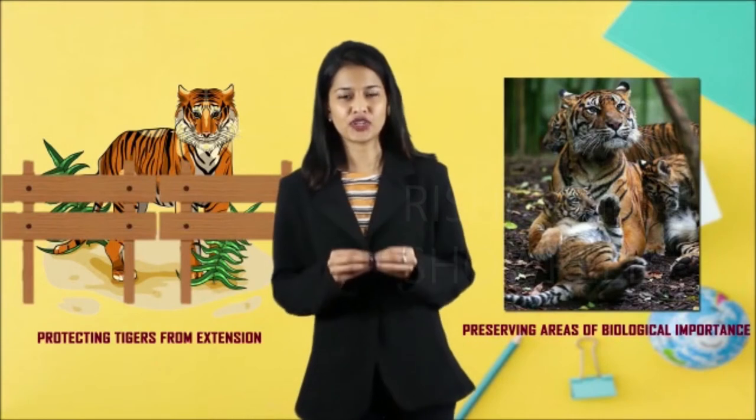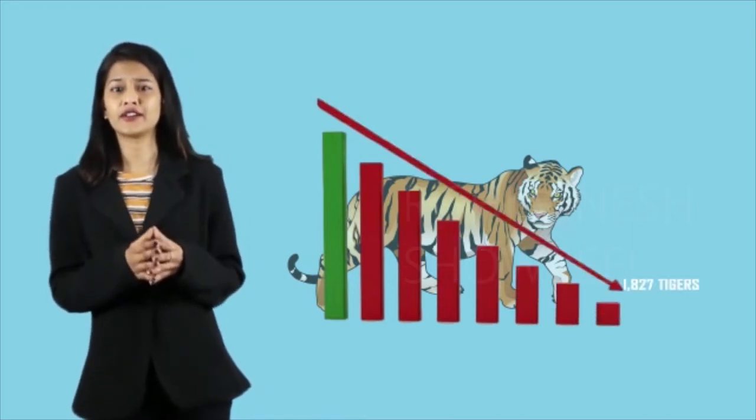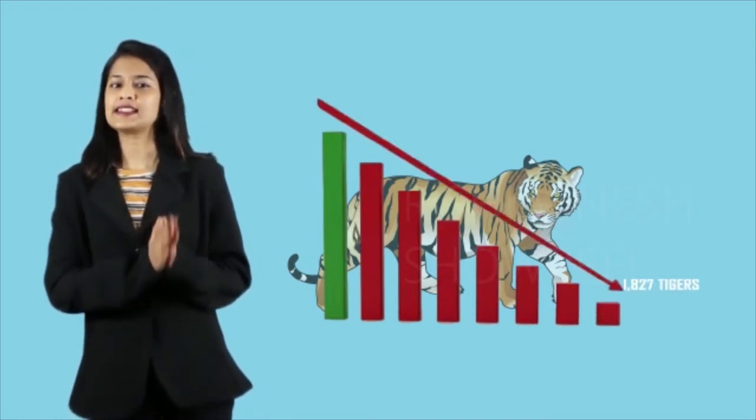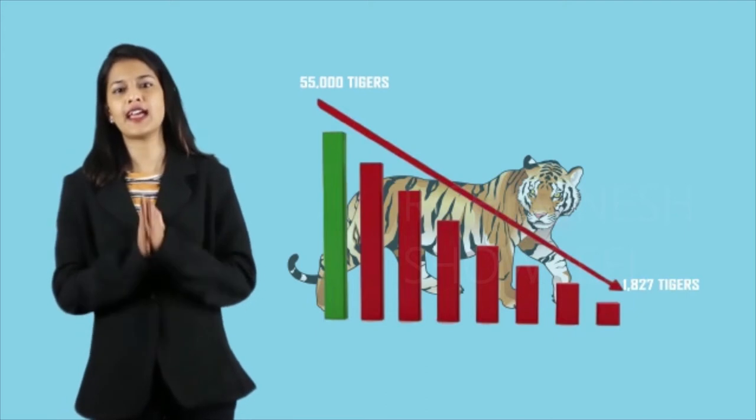This program aimed at protecting tigers from extinction and preserving areas of biological importance. The authorities realized that the tiger population had gradually diminished to 1,827 from an estimated 55,000 at the turn of the century.